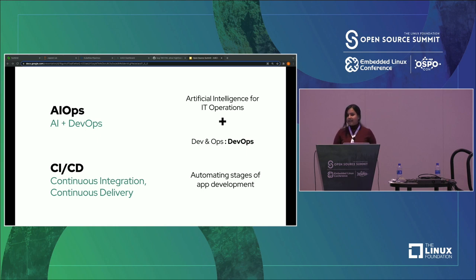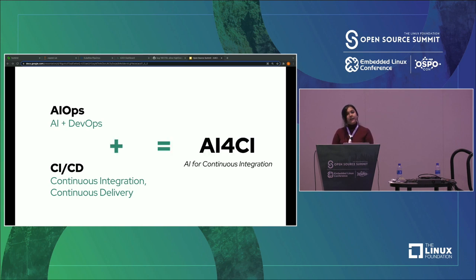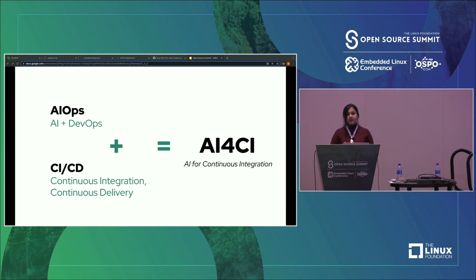What's CI? CI or continuous integration is the practice of automating integration of code from multiple contributors into a single software project. CI CD is a solution to the problems that integrating new code can cause for development and operations teams — it's called the integration hell. So what's AI for CI all about? It's AI applied to CI CD data, simply. It's an intelligent open source AI ops toolkit which can be used to better monitor builds in order to help a development life cycle.